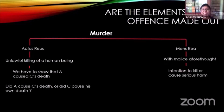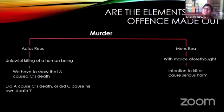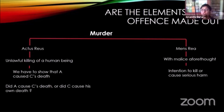The mens rea element is actually easy on these facts. He came home, was furious when he saw his wife in bed with the gardener, took a knife, and stabbed C with it. So even if he didn't have an intention to kill, when you take a sharp knife and stab somebody with it, that is an intention to cause serious harm. Malice aforethought is defined as an intention to kill or an intention to cause serious harm — and here we have an intention to cause serious harm. So the mens rea element is satisfied.